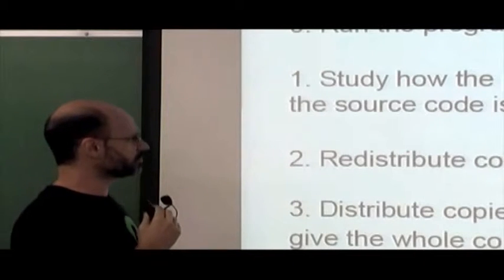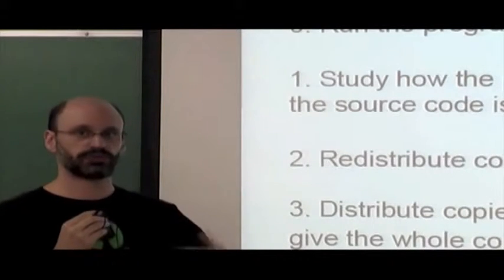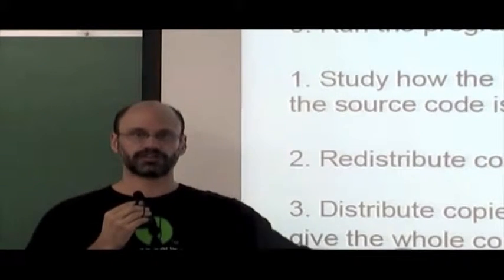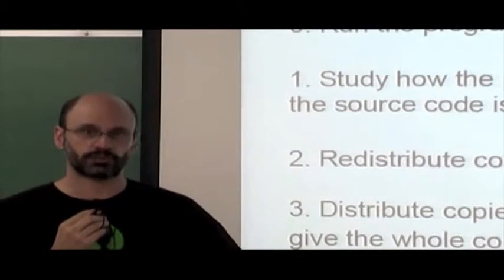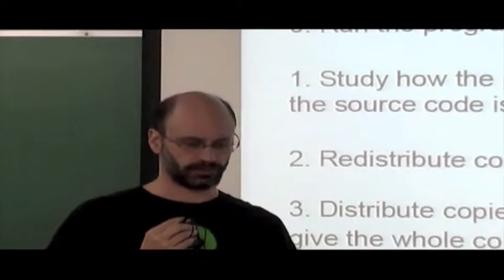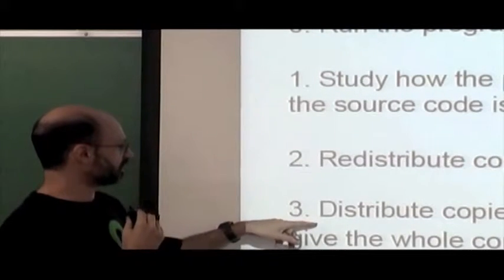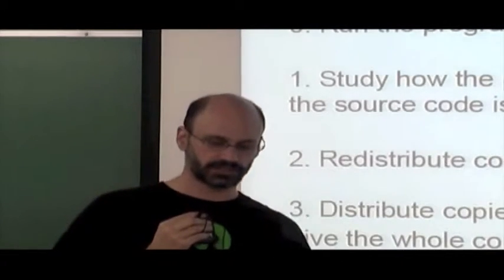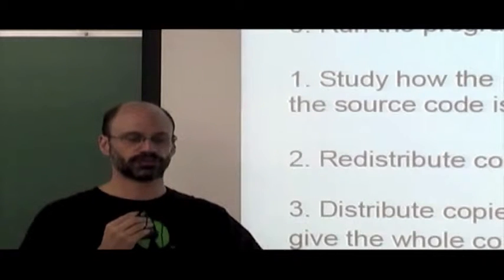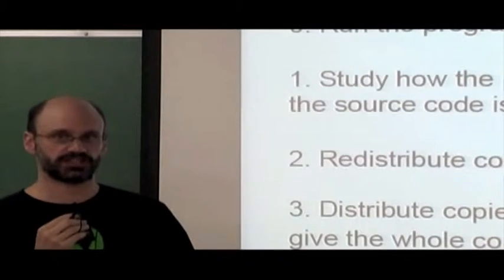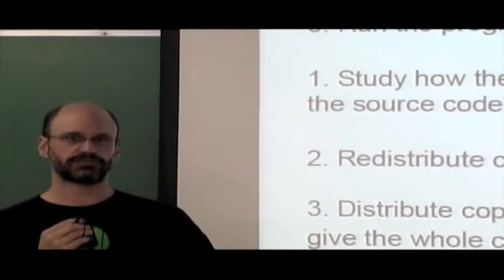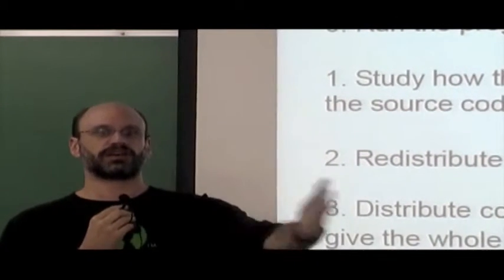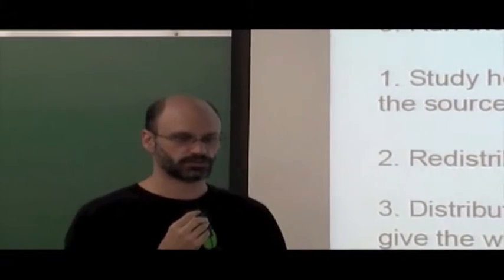Freedom Two is to redistribute copies so you can help your neighbor — you can give copies of the free software to other people so they also benefit. Freedom Three is to distribute copies of your modified versions to others, giving the whole community a chance to benefit from your changes. The idea is: you get the software, use it, improve it, modify it, and share those contributions with the entire community.